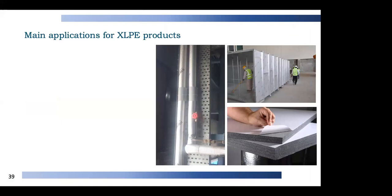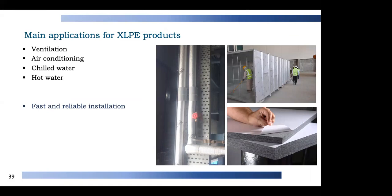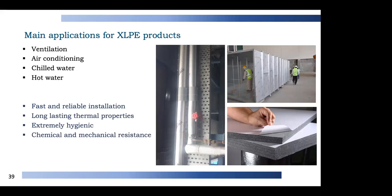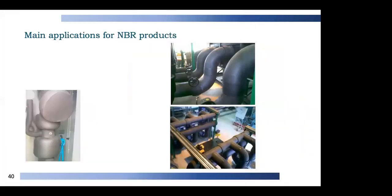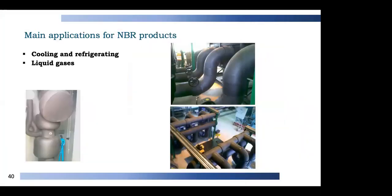Main applications for XLP products are ventilation, air conditioning, chilled water and hot water. Advantages of XLP include fast and reliable installation, long-lasting thermal properties, extremely hygienic material, and better chemical and mechanical resistance compared to other insulation materials. For nitrile rubber, applications include cooling and refrigeration, liquid gases, heating and plumbing, and air conditioning.